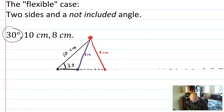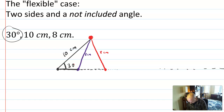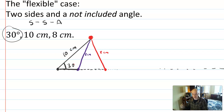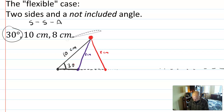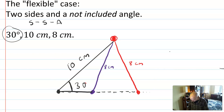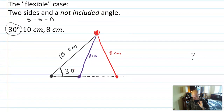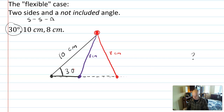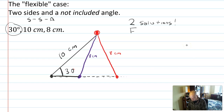That's why it's called the ambiguous case — there are multiple triangles that could potentially be drawn. Two sides and a non-included angle is written as SSA in congruence notation, and that's one we know is not a congruence theorem. The reason it's not is because of this picture: we can create multiple triangles from those givens. But it's not infinitely many — there are at most two solutions. So in a situation with two solutions, why don't we just find both?